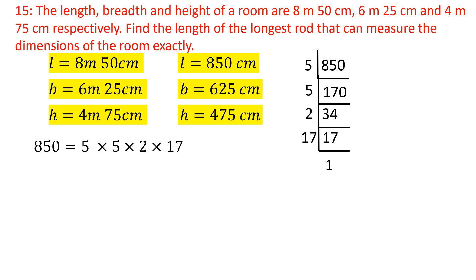Next, we do the prime factorization of breadth value, 625 cm. 625 divided by 5 is 125. 125 divided by 5 is 25. 25 divided by 5 is 5. 5 divided by 5 is 1. So the prime factorization of 625 is 5 × 5 × 5 × 5.